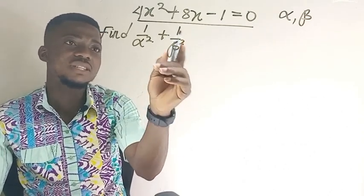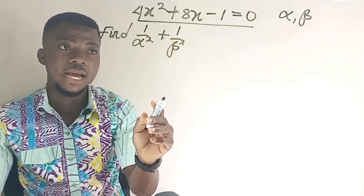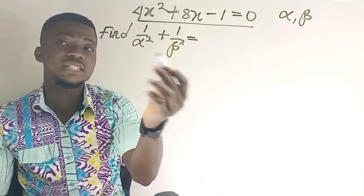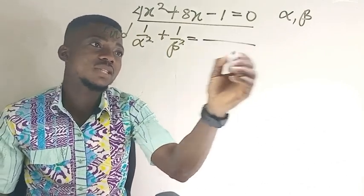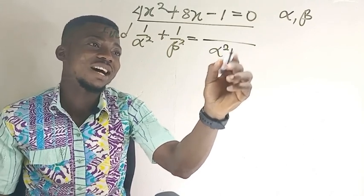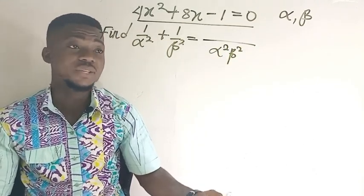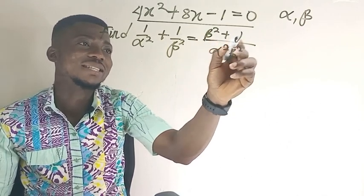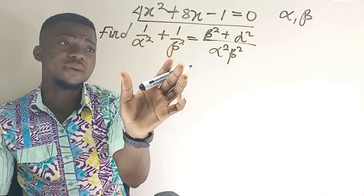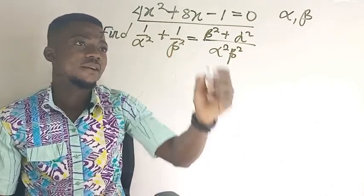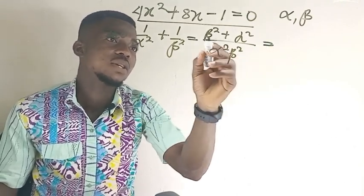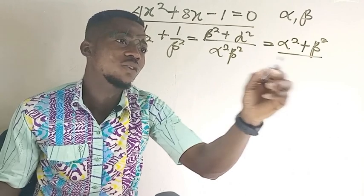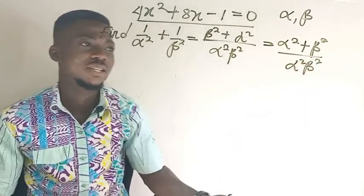The first thing you have to do is to solve this expression that they're giving you. How do you solve this expression? When you have an expression like this, the first thing that you have to do is to find the LCM of the denominators. So we have alpha squared and beta squared — that's going to be our LCM. So we're going to have alpha squared times beta squared as the LCM. This one goes to that, this one goes to that. You're going to have beta squared plus alpha squared. So when we solve this expression, we're going to have alpha squared plus beta squared all over alpha squared times beta squared.